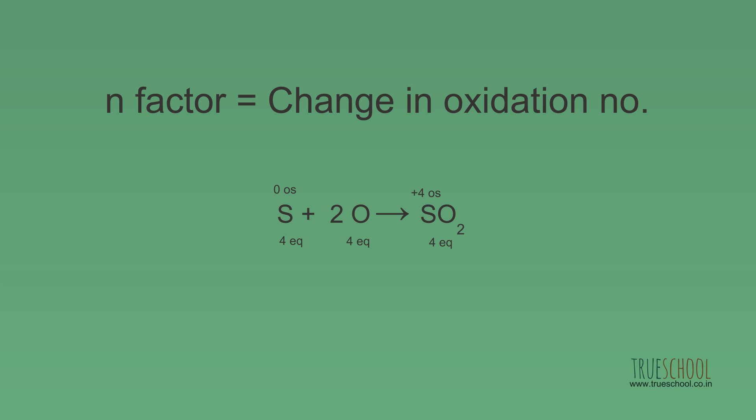If we look at the change in oxidation number of oxygen, it is changing from 0 to minus 2, so n-factor of oxygen is still 2. But as there are 2 moles of oxygen in the reactant, it is in total 4 equivalence.